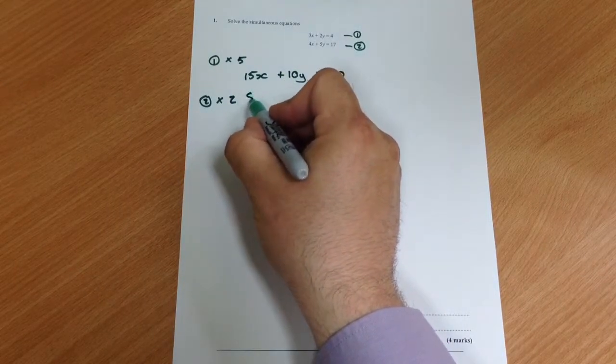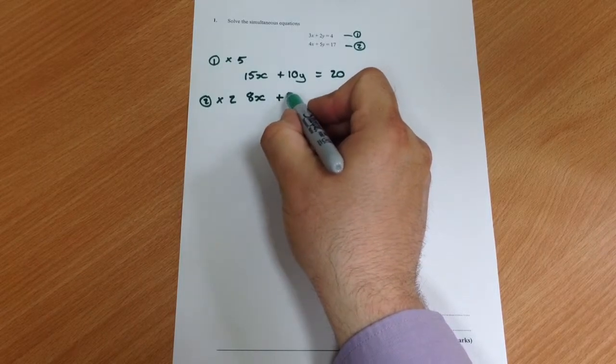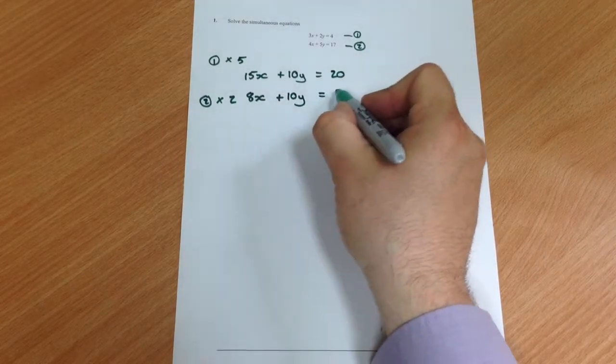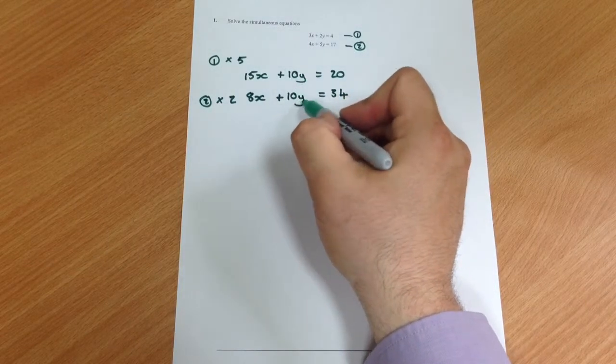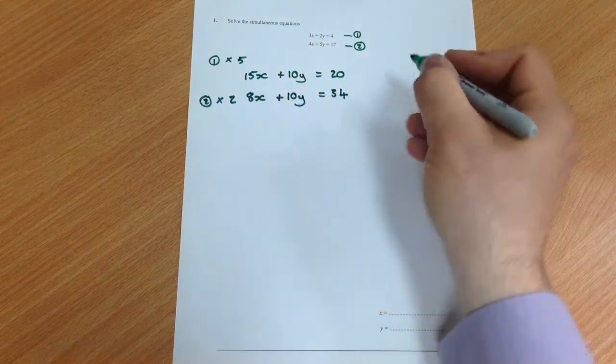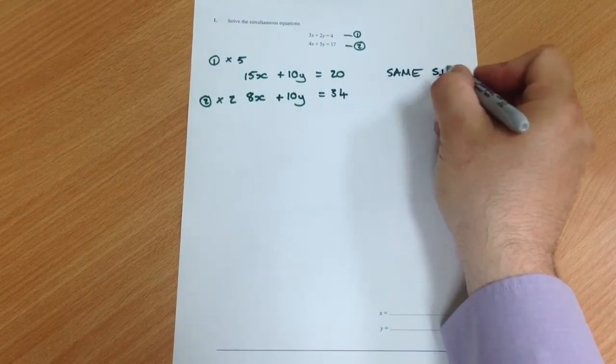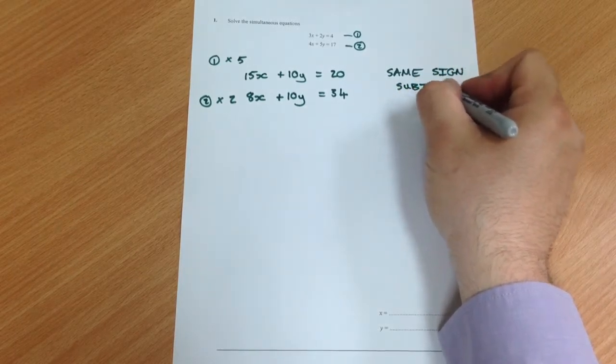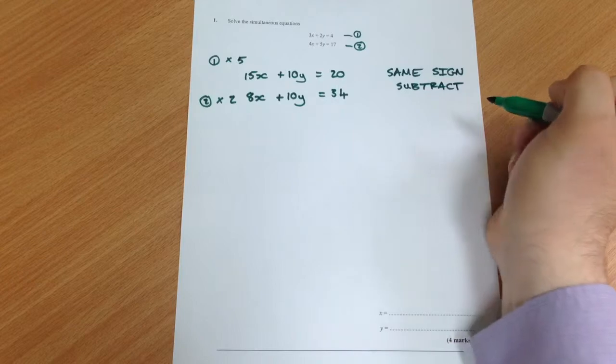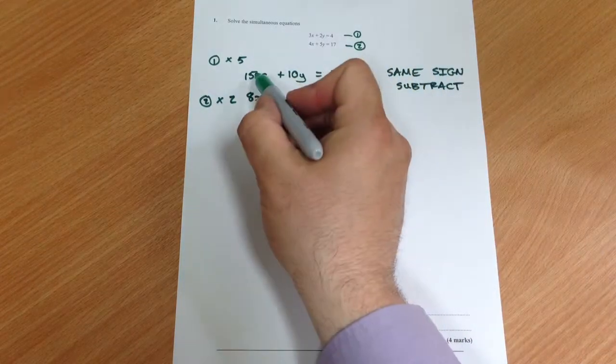Now that 10y and that 10y are the same. Same sign subtract. This is the most important thing to remember here, and if the signs are different you add them.